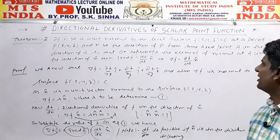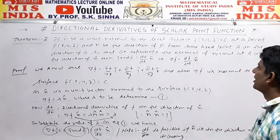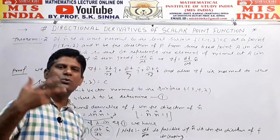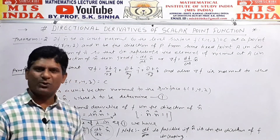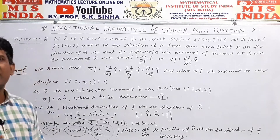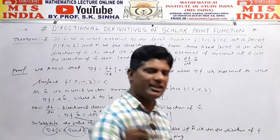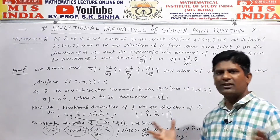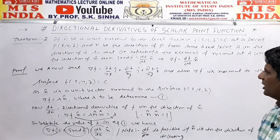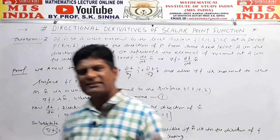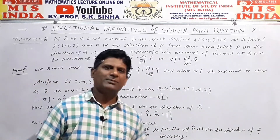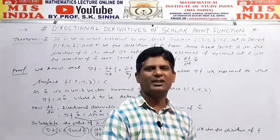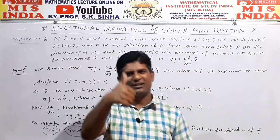So this was the directional derivative of a scalar point function, with two very important theorems. Theorem one shows how to prove df/ds = ∇f · â, and the second theorem shows ∇f = df/dn · n̂. Please practice both important theorems, and you can go to my YouTube channel and write in the comment box.